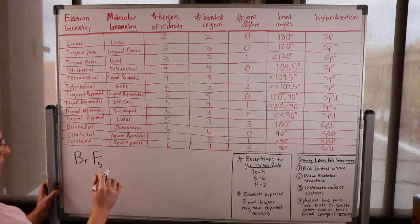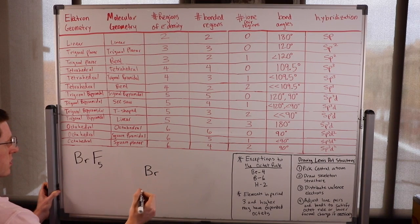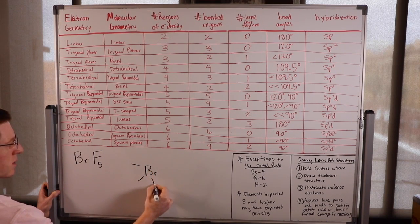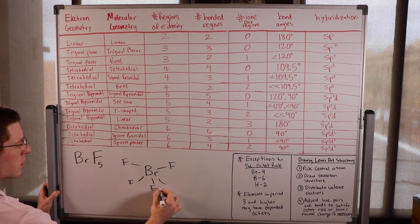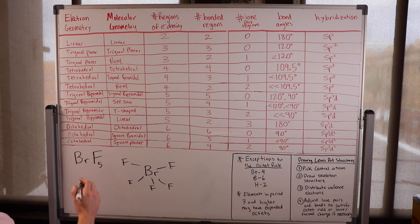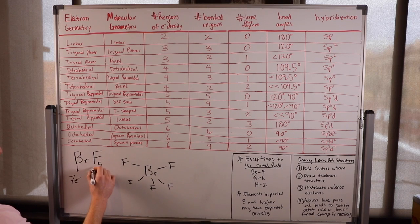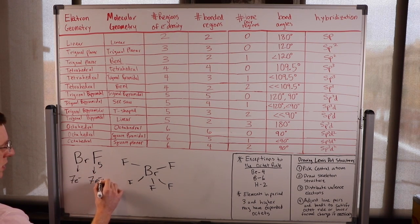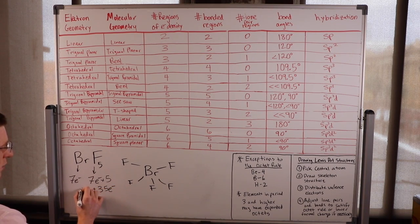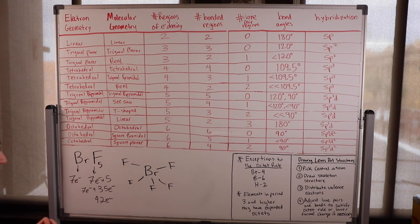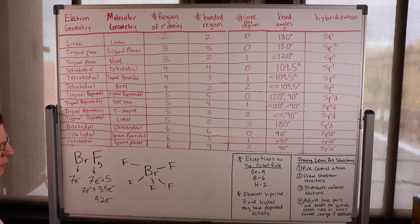Next up is BrF5. I'll pick the central atom as bromine because there's only one, and attach my five outer fluorine atoms. Bromine is in group 7, contributing seven electrons. Fluorine also contributes seven electrons times five of them, so 35 from fluorine plus seven from bromine gives 42 electrons total. After using 10 for five bonds, we have 32 left.